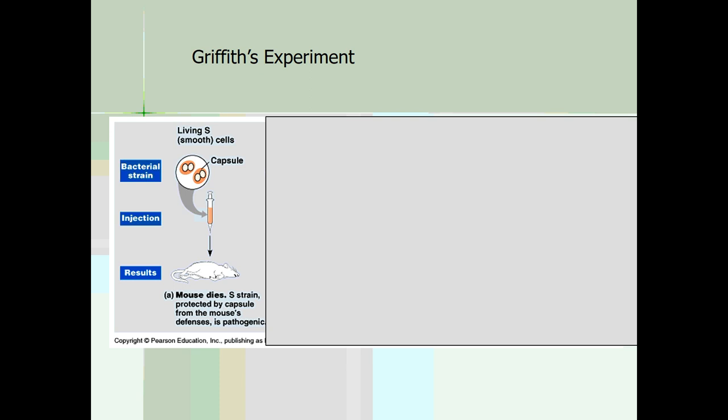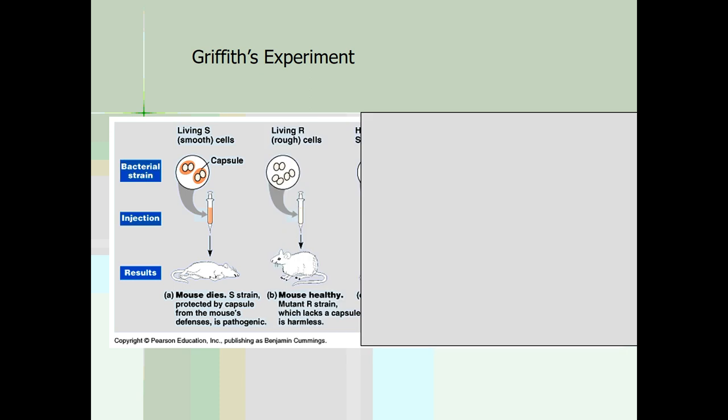Griffith also recognized there is a different strain called R cells, which are rough on their outside edge and not deadly. If you inject living R cells into the mice, they might get some mild respiratory symptoms, but none of them died. R cells are not deadly.